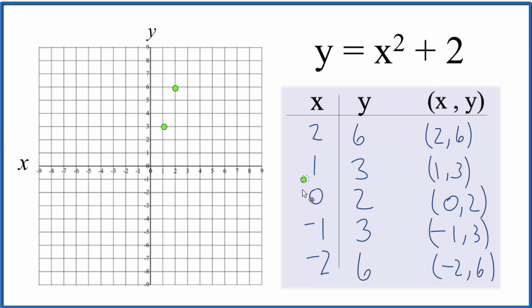Then we have x is 0 and y is 2. So here's x is 0, y is 2. And then we have negative 1, 3. Negative 1, 3. And finally, we have negative 2 for x and y is 6. So negative 2, 6.